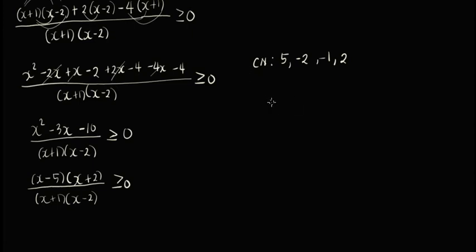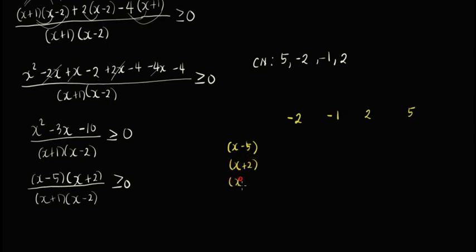Okay, next kailangan natin ihilera ng sunod-sunod yung mga critical numbers natin. So we'll start with negative 2, then negative 1, then 2, and lastly 5. Then let's put all the factors on the left side: we have x minus 5, we have x plus 2, we have x plus 1, x minus 2, and then the whole expression: x minus 5 times x plus 2 over x plus 1 times x minus 2.